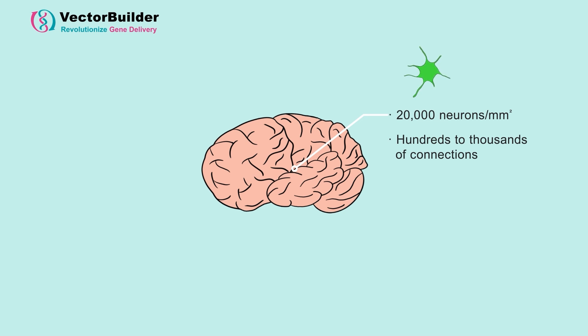While we can stain for markers to show similar types of neurons and use PET scans to show broader areas of activity, understanding functional connections between neurons and how they're associated with thought or activity is very difficult.